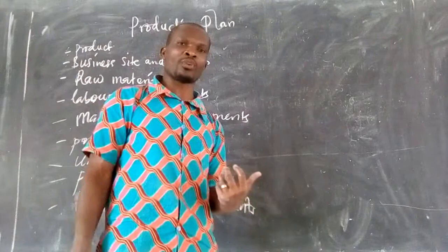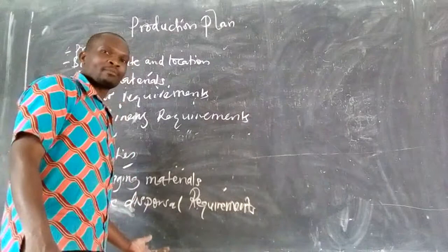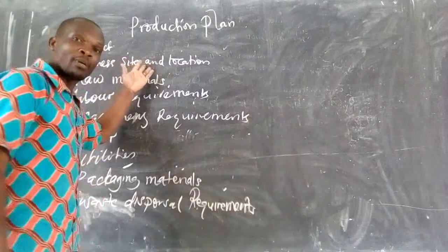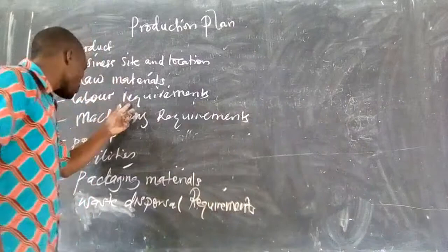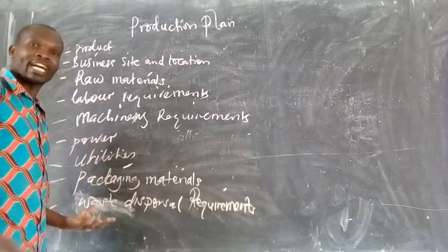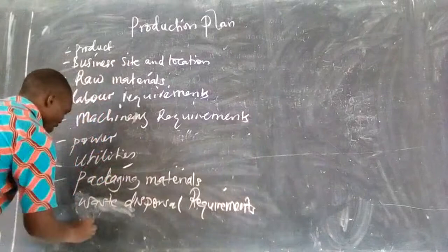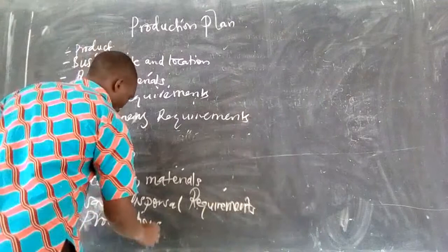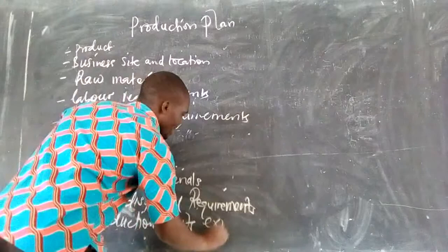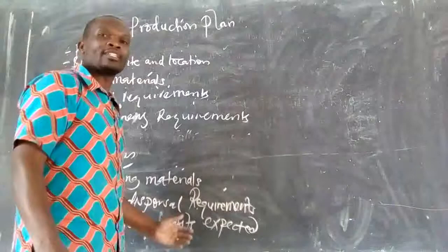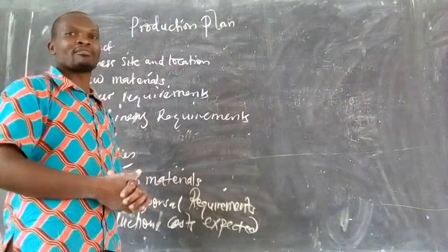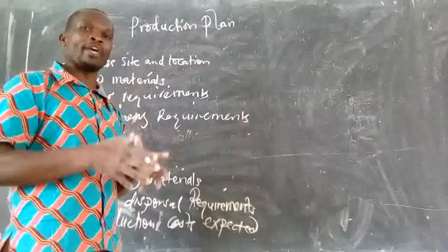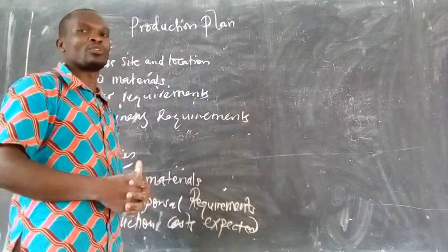Of course, all these items are going to be costed — all of them. And because they are costed, that is why you can include projected production costs. So production costs expected — these will show the summary of all those elements and their respective costs, like a production budget expenditure. It will show the items you are spending on in production and how much you spend on those items.